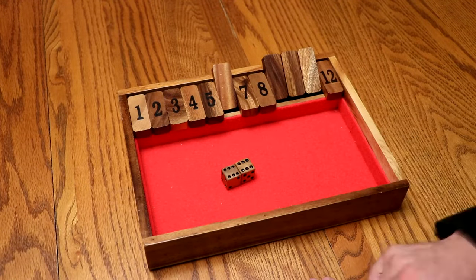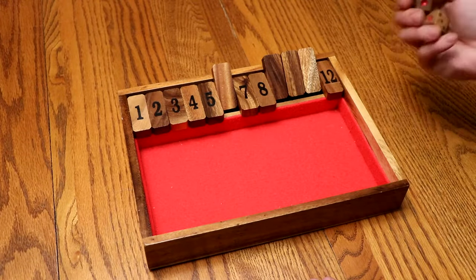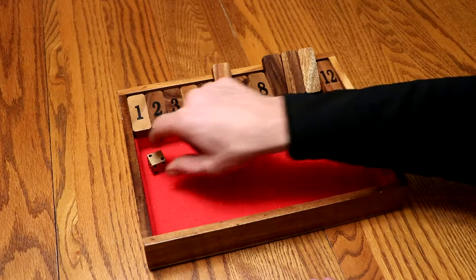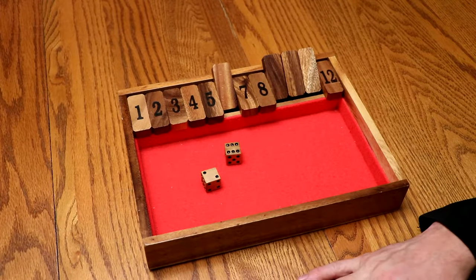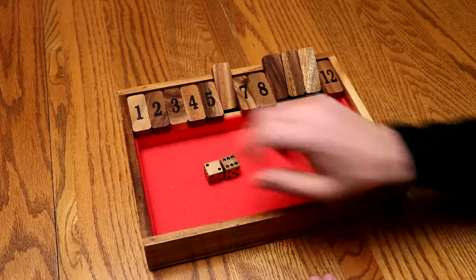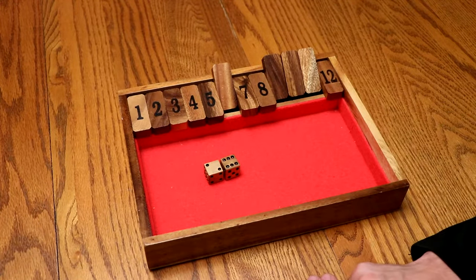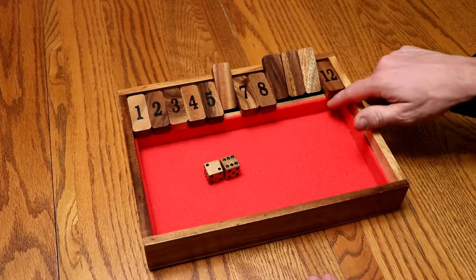As long as I can flip up the tiles for my roll, I get to continue rolling. My turn goes on. The goal, of course, is to flip all these up on my turn. This is what I show the customer. So I've got a six and a two. I could take eight off if I'm adding, or better yet, six times two is 12. Let's get that 12 off so it doesn't count against us later.